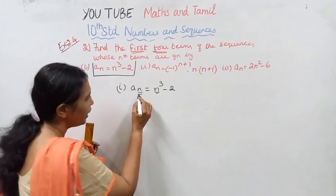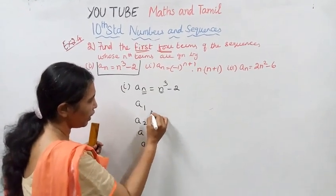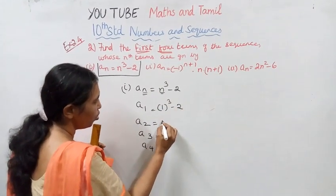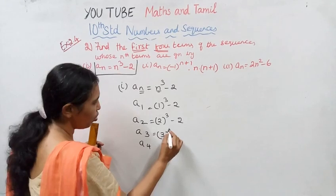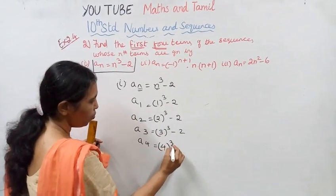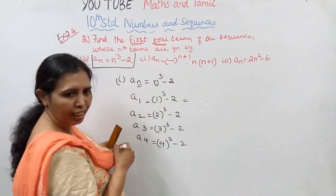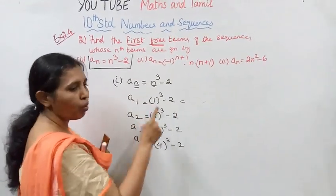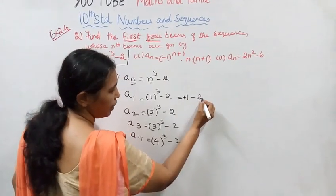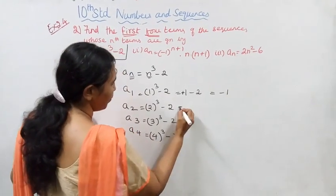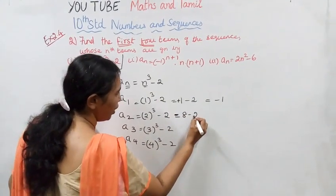a_1 equals 1 cube: 1 into 1 into 1 equals 1, minus 2 equals minus 1. a_2 equals 2 cube: 2 into 2 into 2 equals 8, minus 2 equals 6.